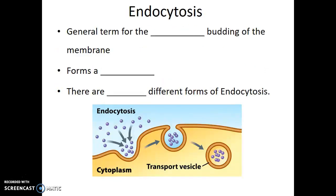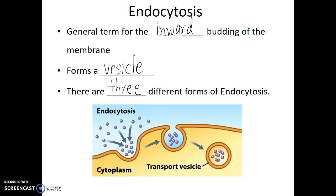When the cell needs to bring materials into the cytoplasm, it uses endocytosis. Endocytosis is the general term for the inward budding of the membrane. As the plasma membrane begins to bend inward, materials that were outside of the cell end up collecting in that pocket, and as soon as that pocket pinches off, it forms a vesicle.